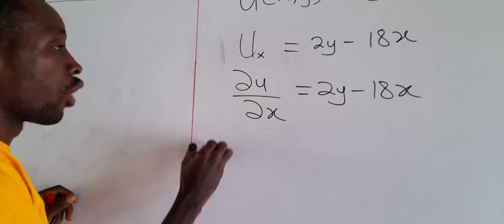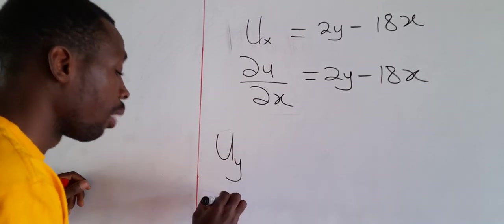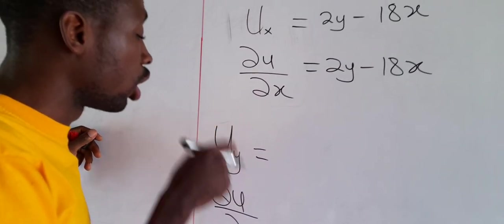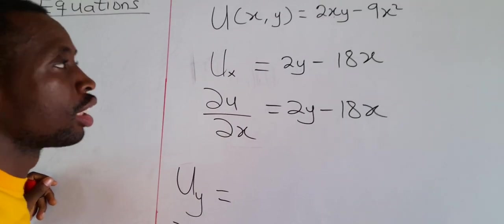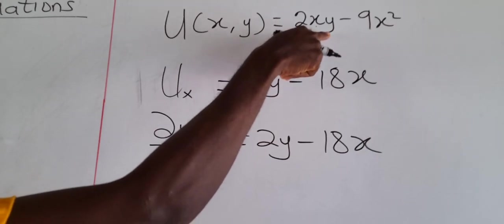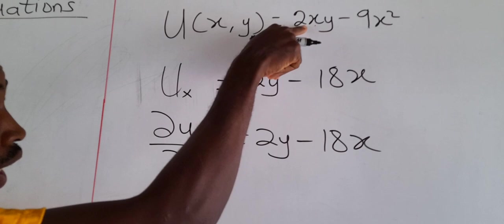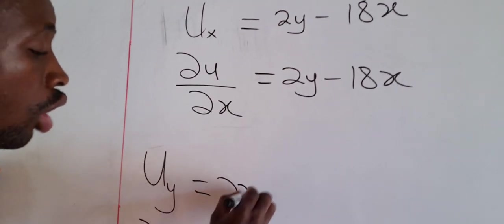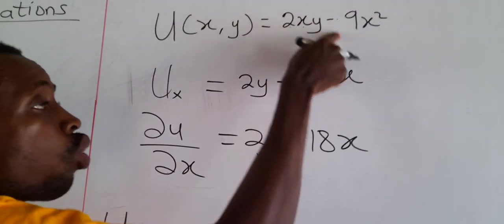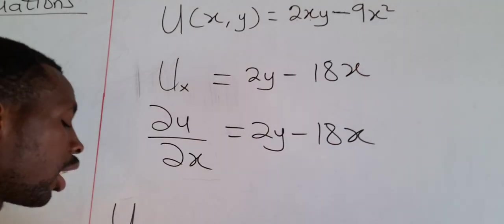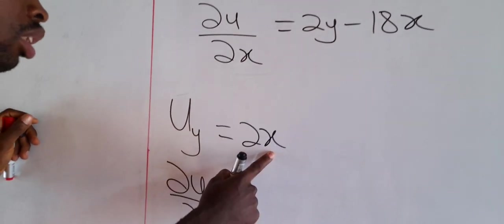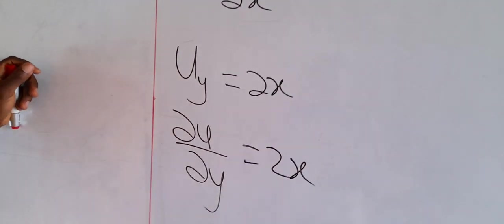Now let's do partial differentiation with respect to y, written as ∂u/∂y. When differentiating with respect to y, x is kept constant. The coefficient of y in the term 2xy is 2x, so the partial derivative is 2x. The term 9x² has no y, so it is constant and its derivative is zero. Therefore, the partial differentiation of the function with respect to y is simply 2x.